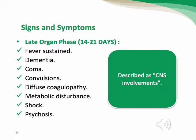The late organ phase, days 14–21, involves sustained fever, dementia, coma, convulsions, diffuse coagulopathy, metabolic disturbance resulting from internal and external bleeding, shock, and psychosis — described as CNS involvement. We must provide accurate and appropriate management, including intravenous fluid infusion, plasma transfusion, and maintaining hemodynamic stability, to avoid these late-phase consequences.